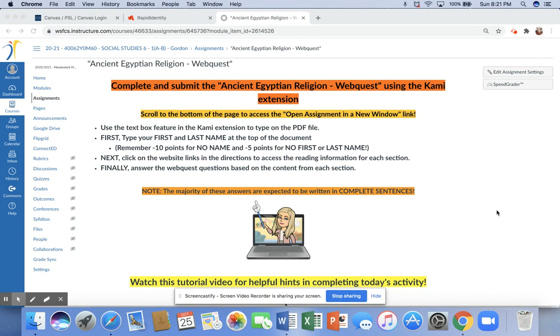You're also going to use the text box feature to be able to type on the PDF file. The first thing that you're going to do is add a text box at the top of the document and type your first and last name. Remember, it's minus 10 points for no name and minus 5 points for no first or last name.